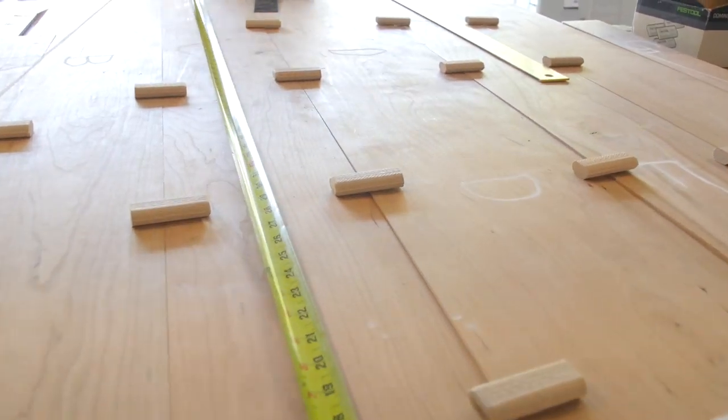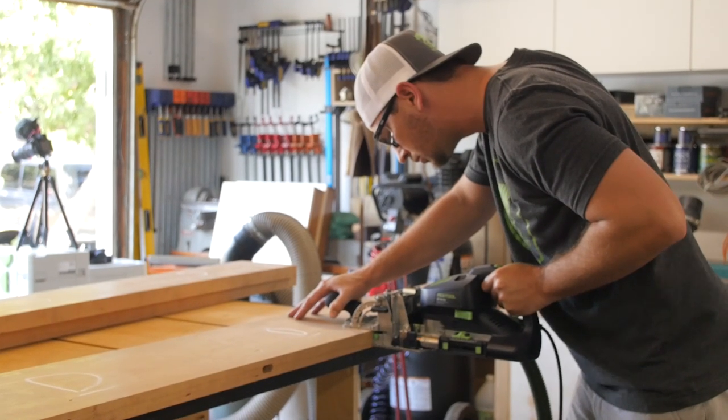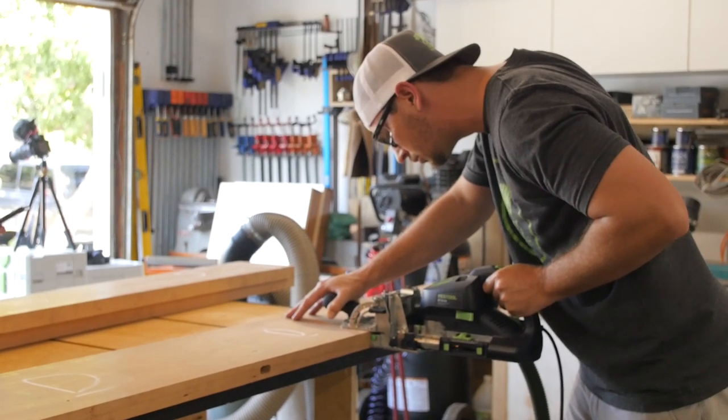Then we could start laying out the dominoes for how we were going to join the whole tabletop together. The domino helps with alignment and makes the glue up really strong. That's Taylor using the domino there.